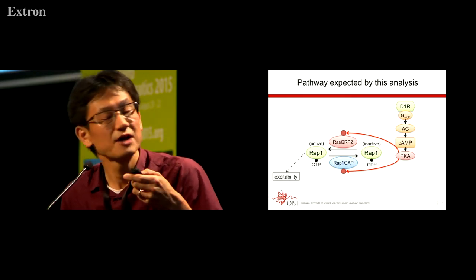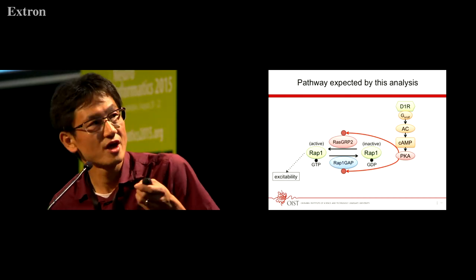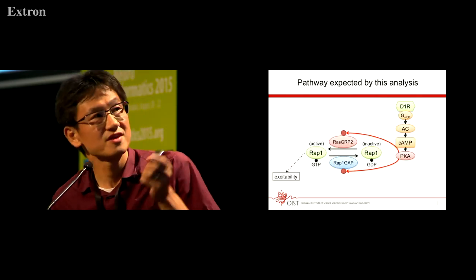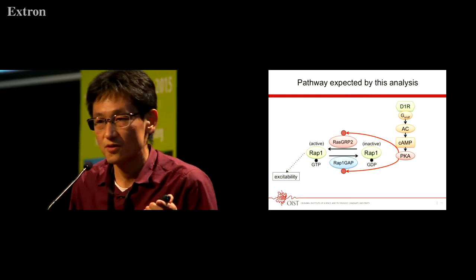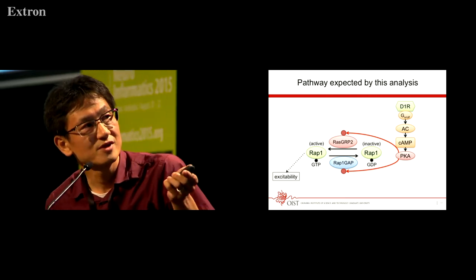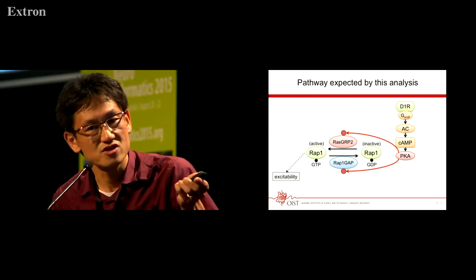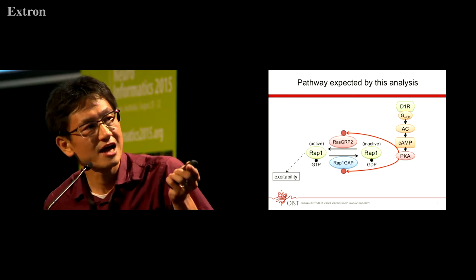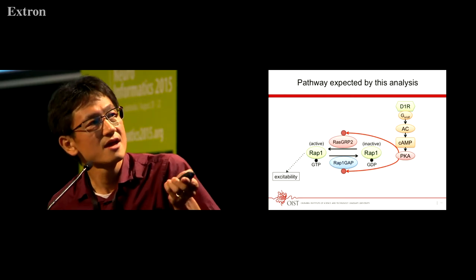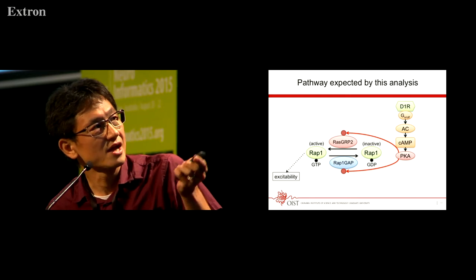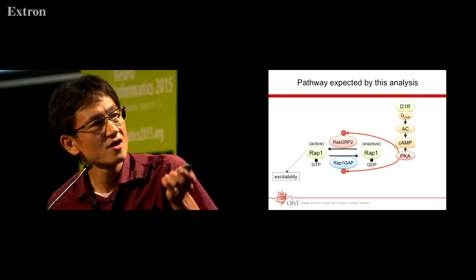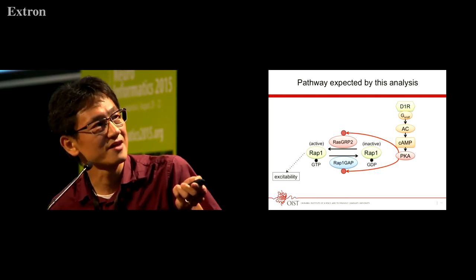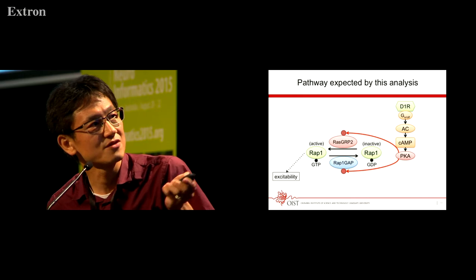I'd like to skip the more detailed analysis, but this is a summary. It is well known that dopamine stimulation activates PKA, which is one kind of kinase. But in our analysis, the activation of PKA changes the RAP1 status from inactive form to active form via RasGRP2 and RAP1GAP,